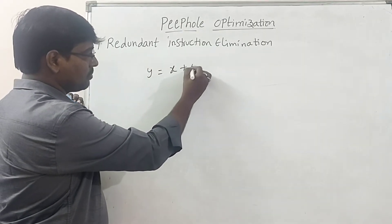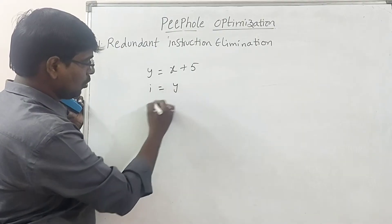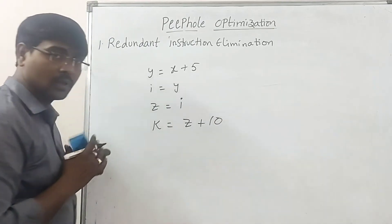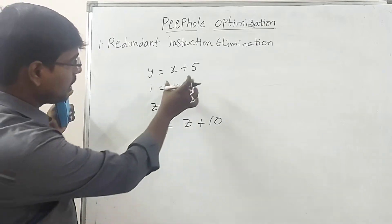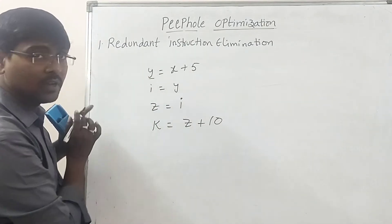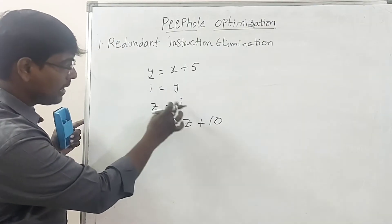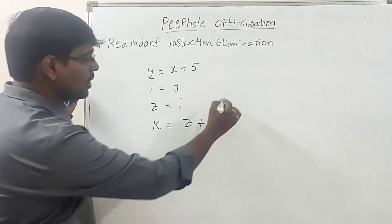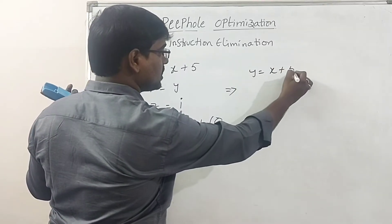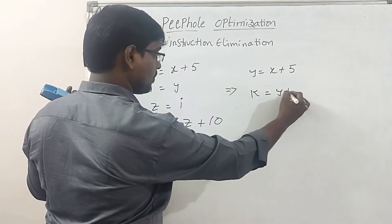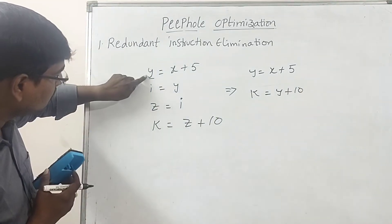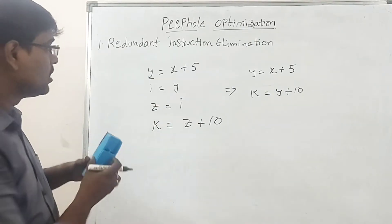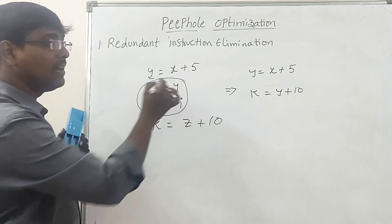Simple example: Y = X + 5, then I = Y, Z = Y, and K = Z + 6. Here we are performing operations stored in variable Y, then Y is assigned to I, I is assigned to Z, and Z is used in the next statement. Unnecessarily we are storing the value into I, then I into Z. These are redundant assignments.